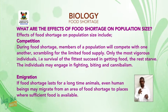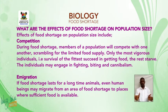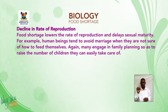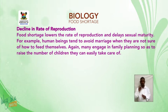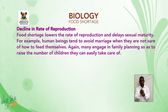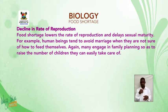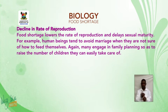2. Emigration. If food shortage lasts for a long time, animals — even human beings — may migrate from an area of food shortage to places where sufficient food is available. 3. Decline in rate of reproduction. Food shortage lowers the rate of reproduction and delays sexual maturity. For example, human beings tend to avoid marriage when they are not sure of how to feed themselves. Many also engage in family planning so as to reduce the number of children they can easily take care of.